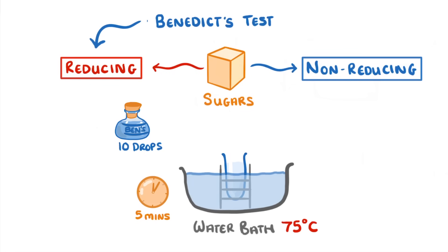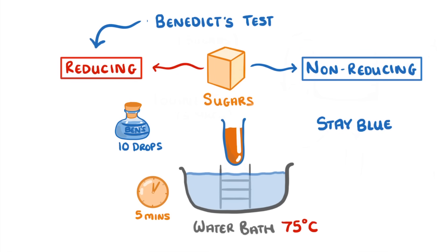If no reducing sugars are present the solution will stay blue, but if reducing sugars are present it should change to green, yellow, or even brick red depending on the concentration.